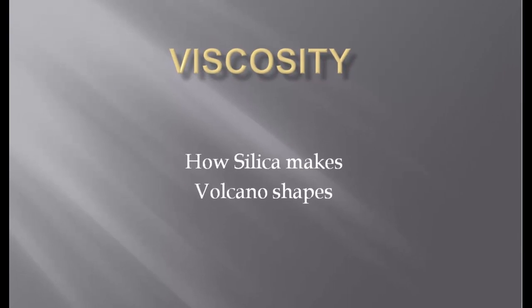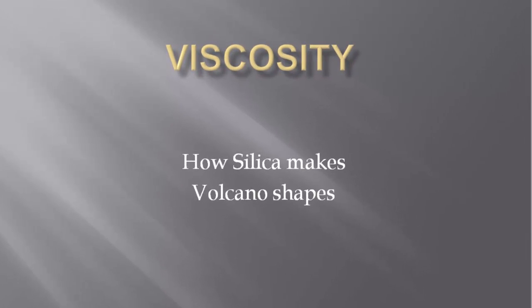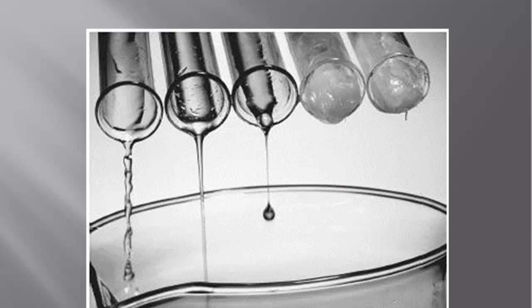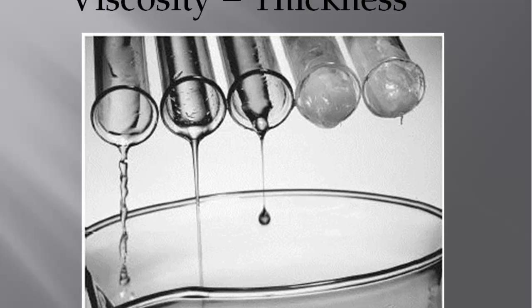This is the story of viscosity, or how silica makes volcano shapes. In the example, you see a free-flowing liquid on the left that would be considered low viscosity. On the right side, you have a very thick liquid that's not coming out of that test tube at all, which would be considered very high viscosity. So for our purposes, the definition of viscosity would be the same as thickness.